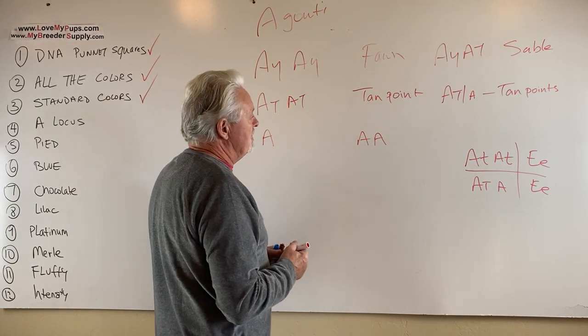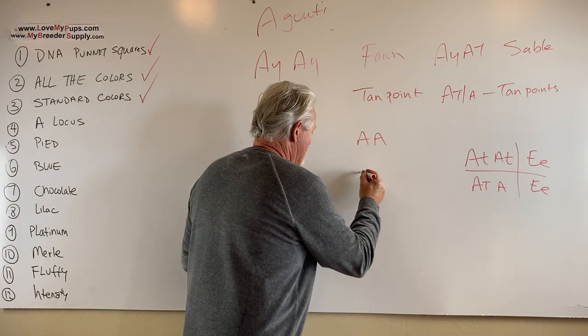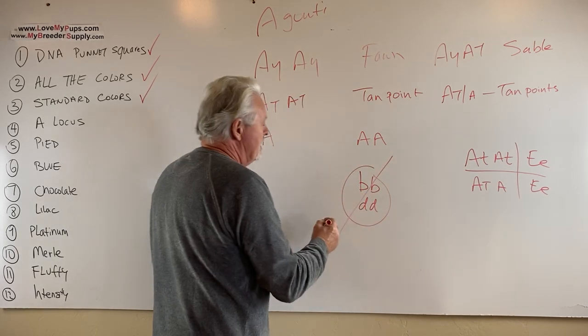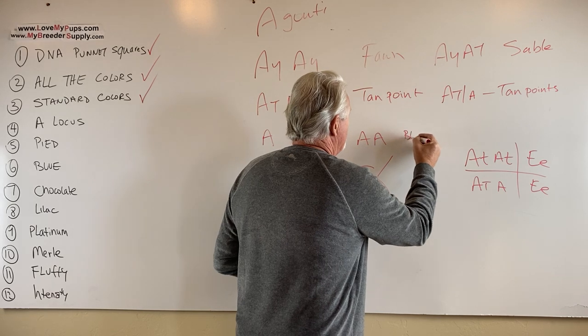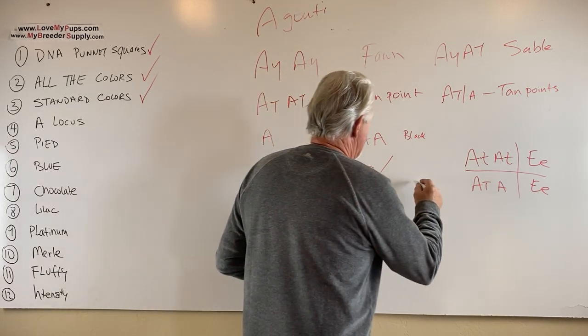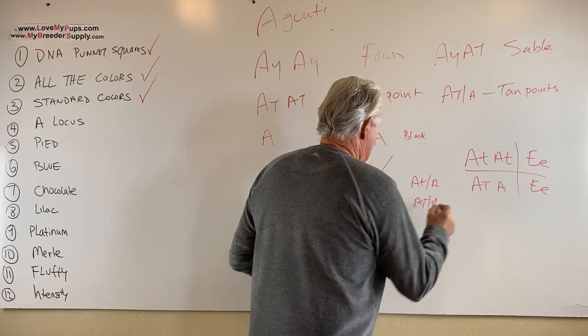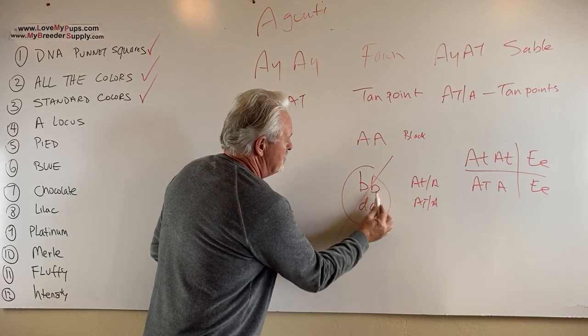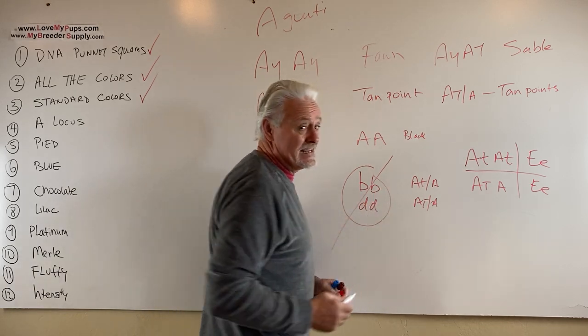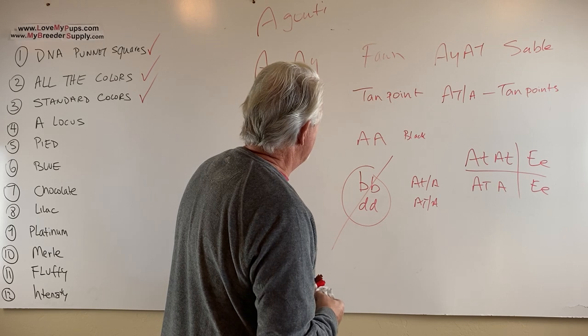So what is an AA dog? Well, if you have an AA dog that doesn't have blue, doesn't have two copies of blue, it is not chocolate and it's not blue, then that would be a black dog. If you had a dog that is ATAT or ATA, and it doesn't have either blue or the chocolate, it's not a blue dog or a chocolate dog, that would be a black and tan.